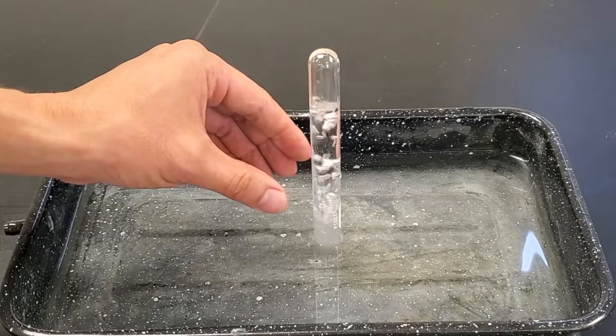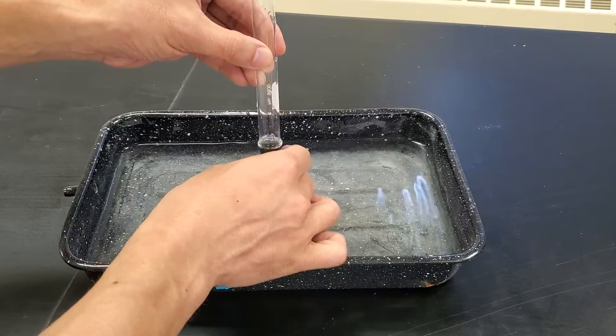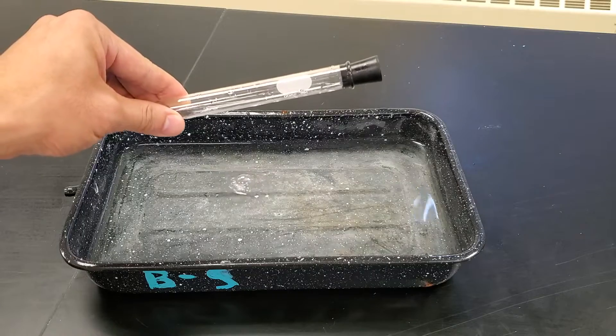As the gas is going up, it's pushing the water out. I'll raise the test tube to draw the remaining water out and stopper it. That's how you get hydrogen gas in a test tube.